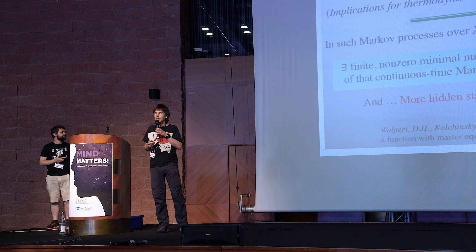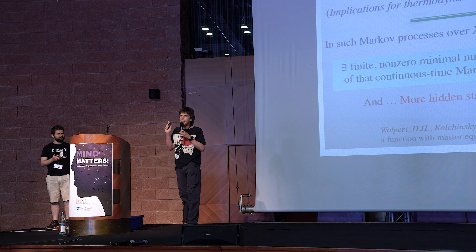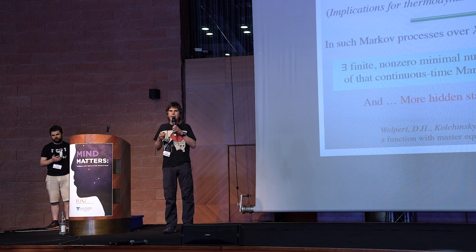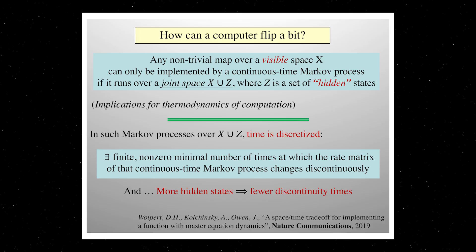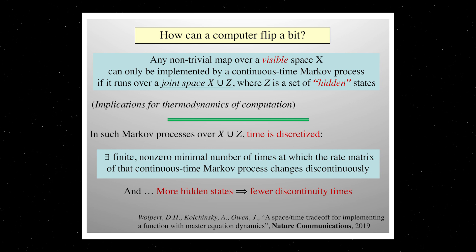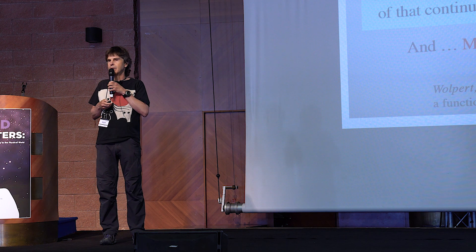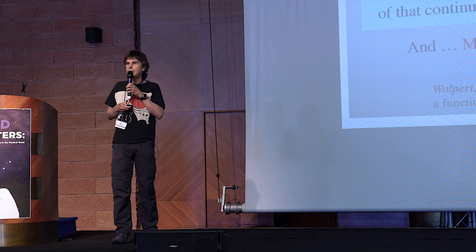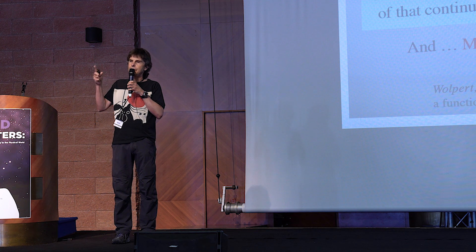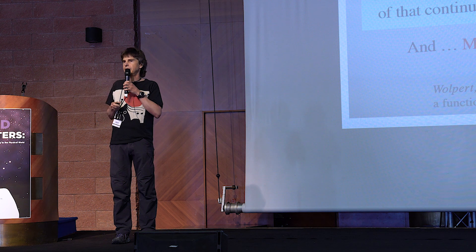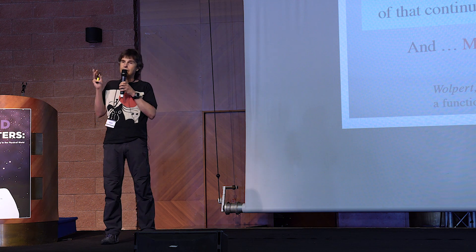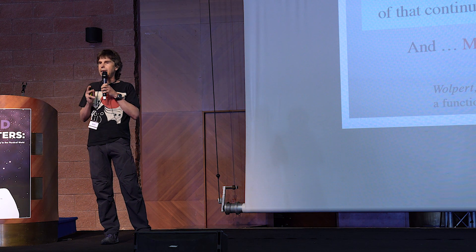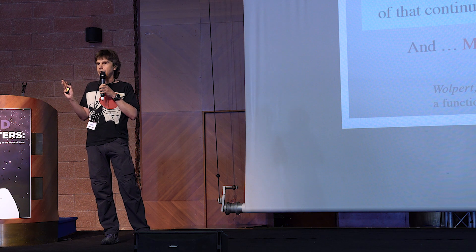Now let me go back and redo all my thermodynamics for things as complicated as even bit flips. You can do all this, but you'll notice something as you start playing around with these rate matrices, varying them in such a way as to do this complicated thing like flipping a bit: there is going to be a non-zero minimal number of times during the dynamics at which your rate matrix actually changes discontinuously. You can prove that this is always the case — there is a lower bound, for any non-degenerate process, on the number of discontinuous jumps of your rate matrix implementing it. In other words, there is a discrete, non-zero number of time steps. Time is digital in a purely classical world if your dynamics is anything other than trivial.